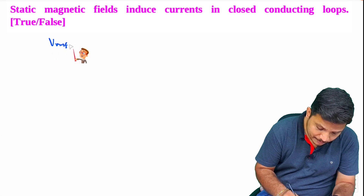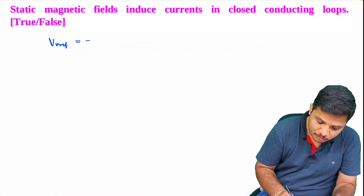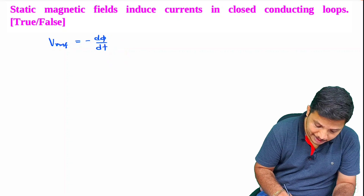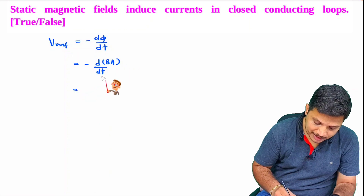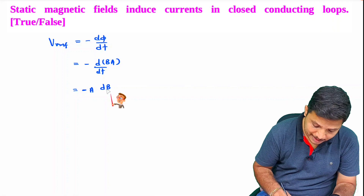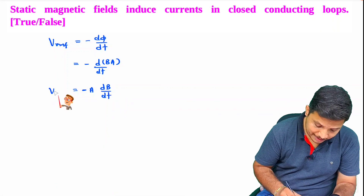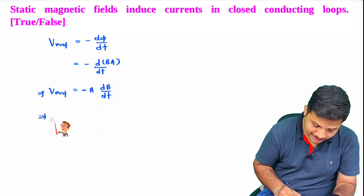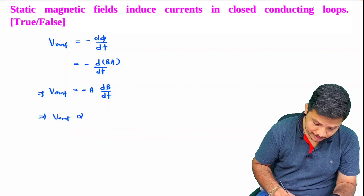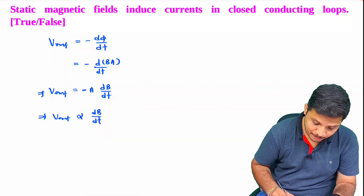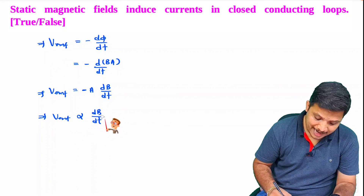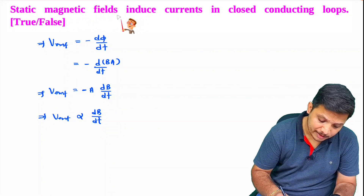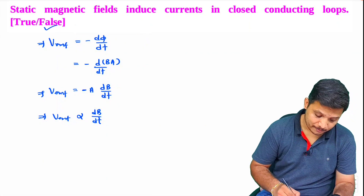Induced EMF equals minus dΦ/dt. Substituting what Φ is — magnetic flux equals magnetic field into area. If area is constant, this becomes minus A times dB/dt. So EMF is directly proportional to the rate of change of magnetic field with respect to time. To generate EMF, there has to be a dynamic magnetic field. Therefore, a static magnetic field does not induce current, and this statement is false.